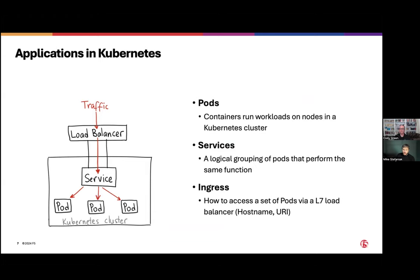That pod has containers that are running our workloads inside of a node, and then we publish a service — a logical grouping of pods that perform the same functionality. Mike and I may deploy a subnet calculator application for internal customers, which would be a couple of pods running individual containers, and that service would be our subnet calculator. But all of that exists inside of Kubernetes, and our users don't live there, so we have to get that application out to them. One of the ways we can do that is via ingress services, which provide Layer 7 load balancing either via hostname or URI.